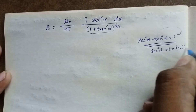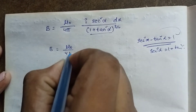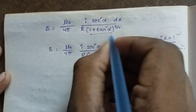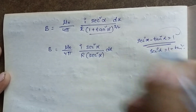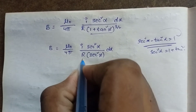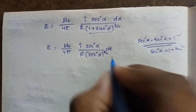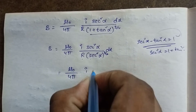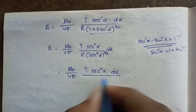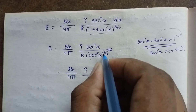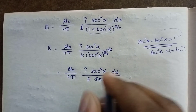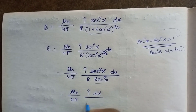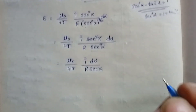Using the identity sec²α = 1 + tan²α, we substitute: (R² + R²tan²α)^(3/2) equals R³·(1 + tan²α)^(3/2) equals R³·sec³α. So B equals μ₀ by 4π into i·R·sec²α·dα divided by R³·sec³α, which simplifies to μ₀ by 4π into i by R times the integral of 1/secα dα, which is cosα dα.